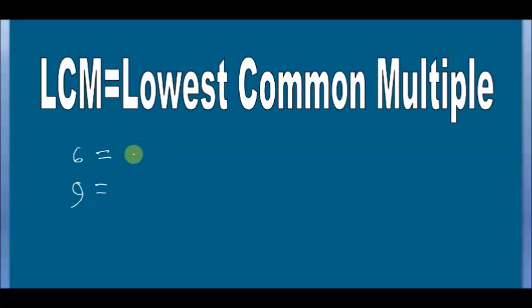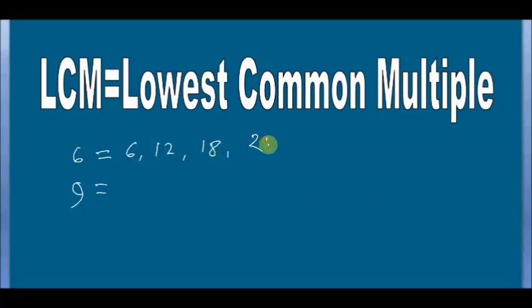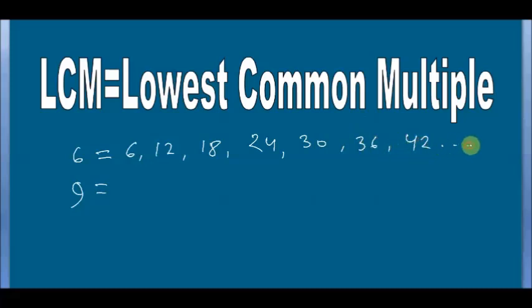To find the multiples of 6, multiply 1, 2, 3, 4, 5, 6, 7 one by one: 6, 12, 18, 24, 30, 36, 42 and so on.